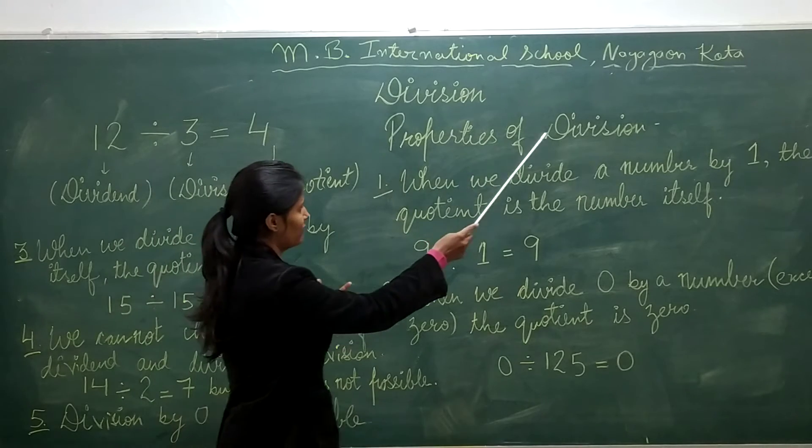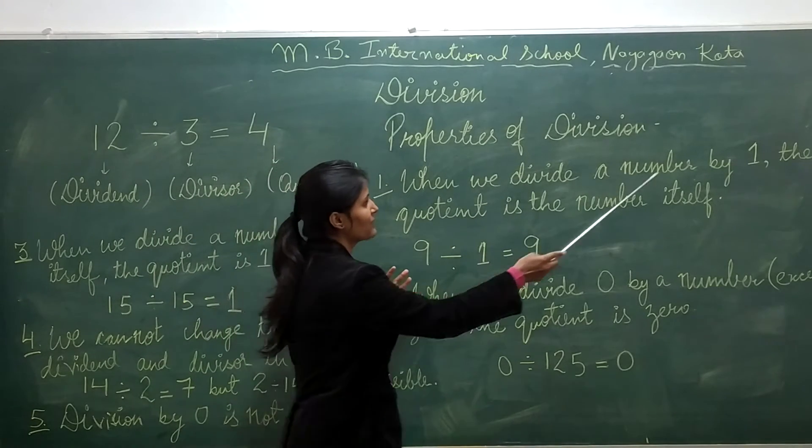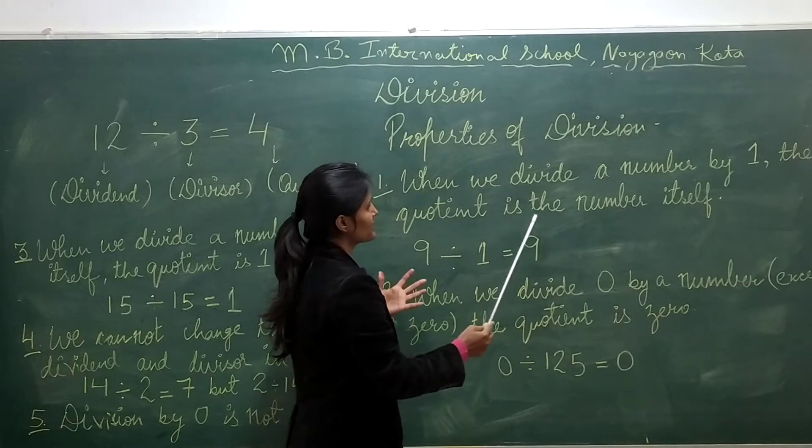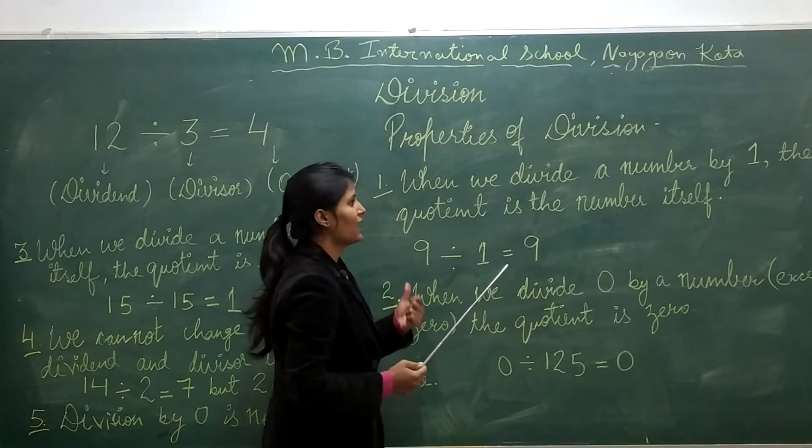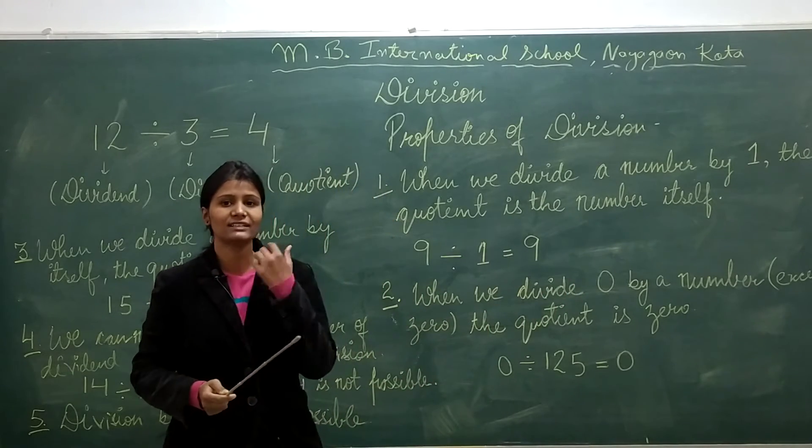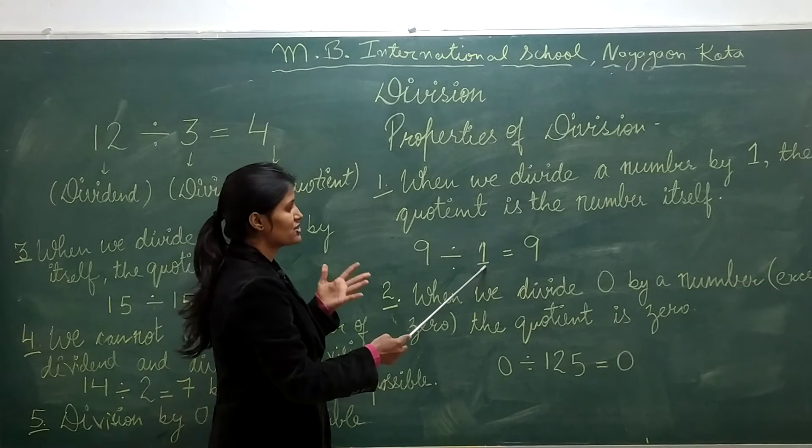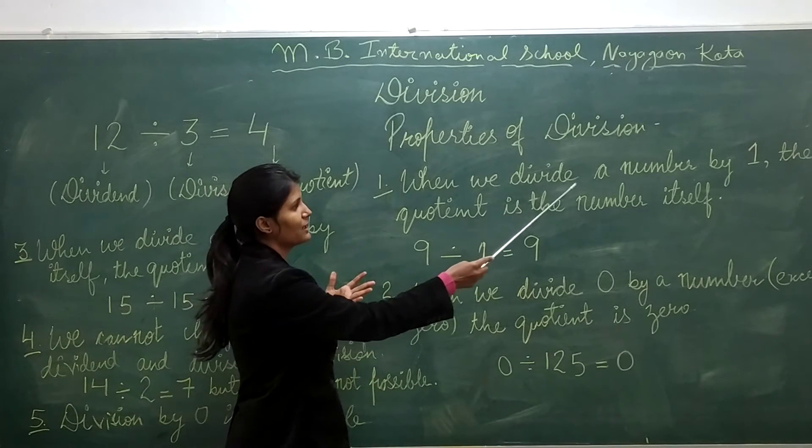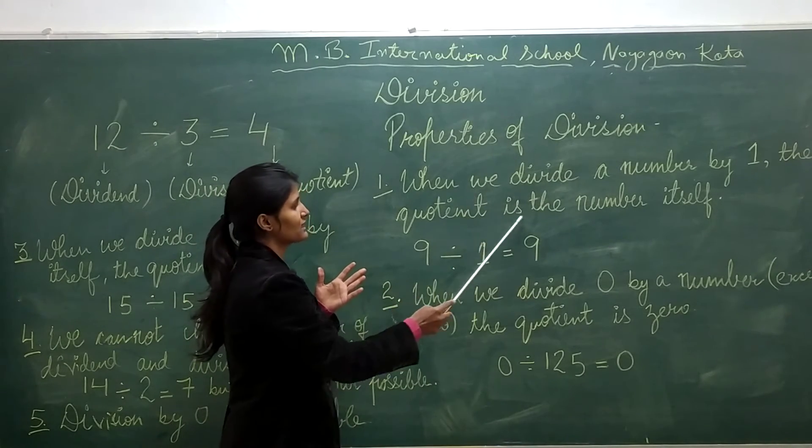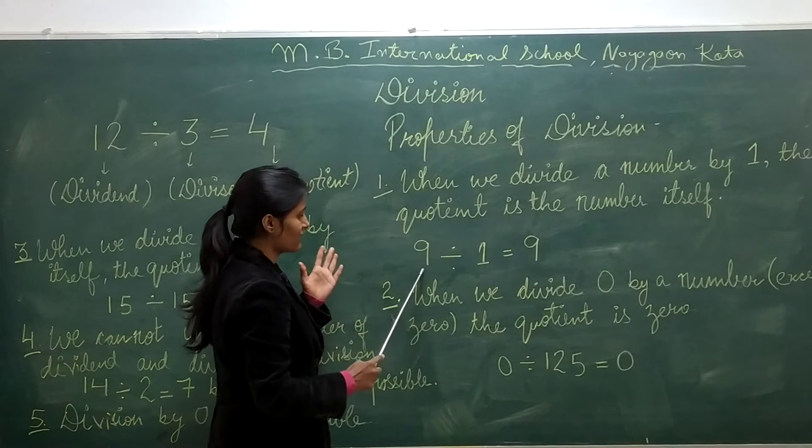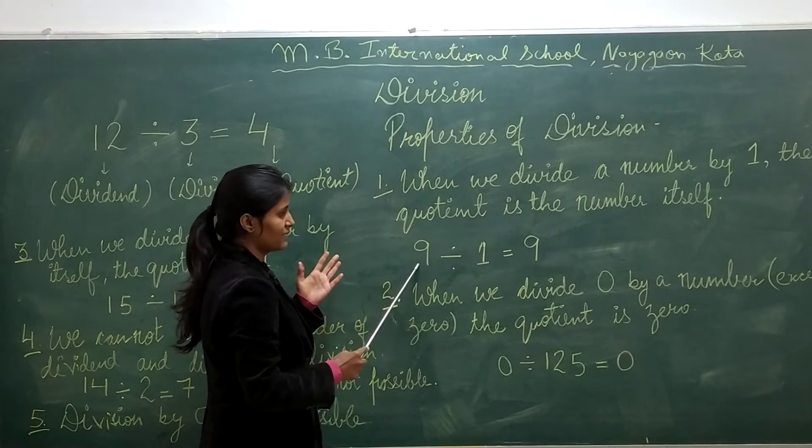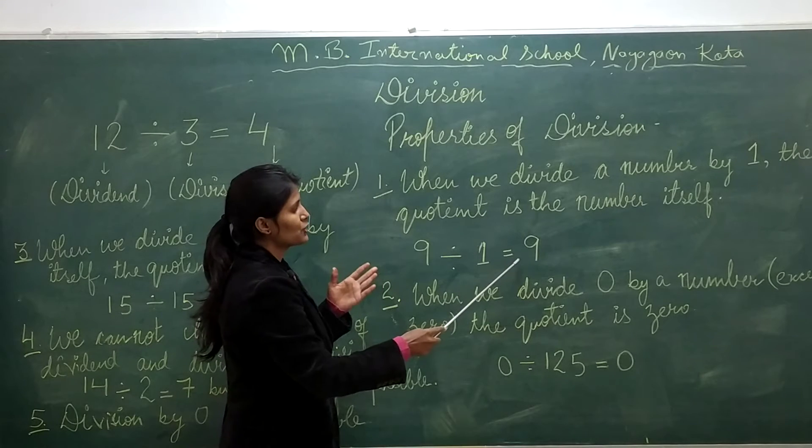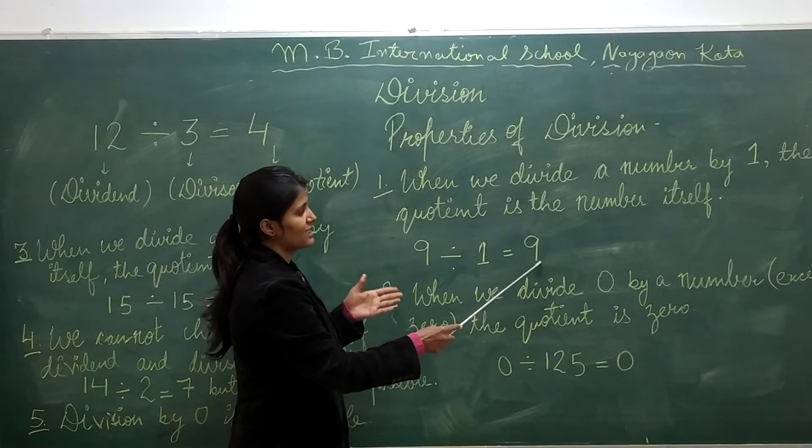Now, properties of division. First, when we divide a number by 1, the quotient is the number itself. For example, when we divide 9 by 1, the quotient is 9.